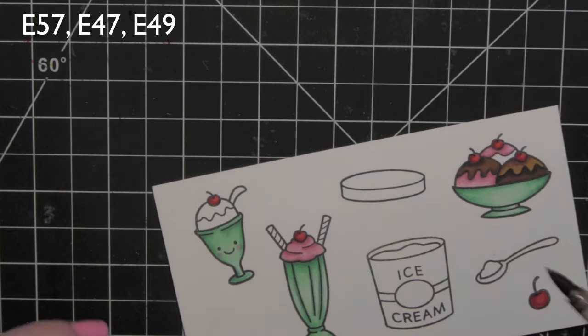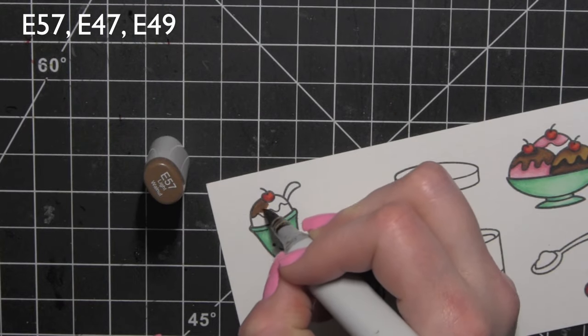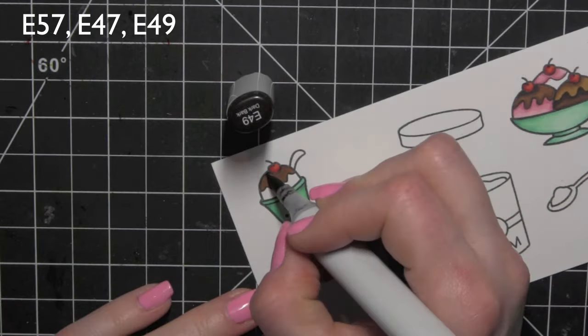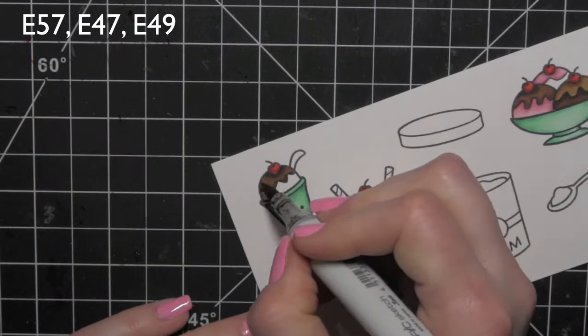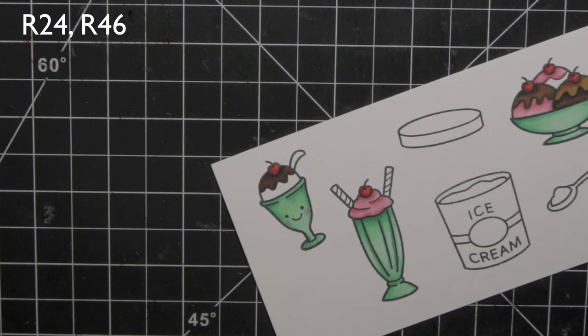I'm going to switch back to my dark brown colors, the E57, 47 and 49 for the chocolate topping over here. Again coloring it just like I did the others.